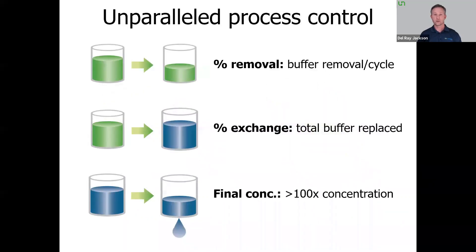Unlike centrifugation or dialysis manual methods, BigTuna gives you precise control over your buffer exchange parameters, and you can program these ahead of time. Whether it's your percent removal, your percent exchange, or the final concentration, you can program that into BigTuna and have those results delivered to you. This gives you individual control without sacrificing the efficiencies you get by scaling up.